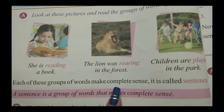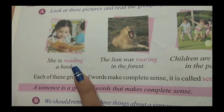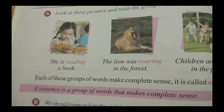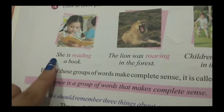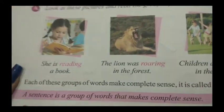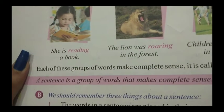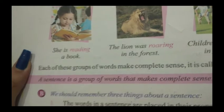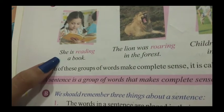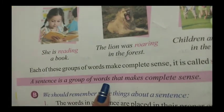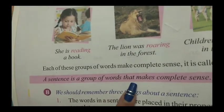Each of these groups of words makes complete sense. It is called a sentence. A sentence is a group of words that make complete sense. You have to remember this definition: a sentence is a group of words that make complete sense.